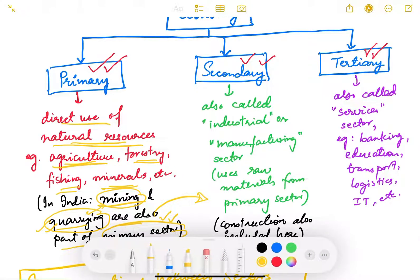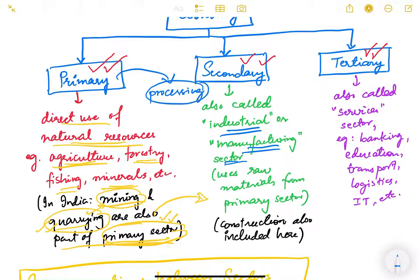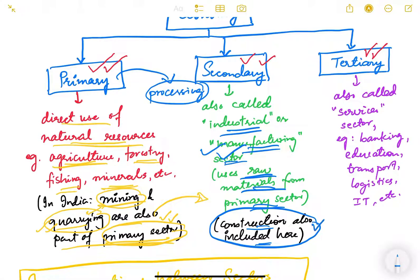The secondary sector is also known as the industrial or manufacturing sector. Here, the processing of raw material obtained from the primary sector happens through an industrial process or manual labor. It uses raw material from the primary sector. Construction activity is also included in the secondary sector.